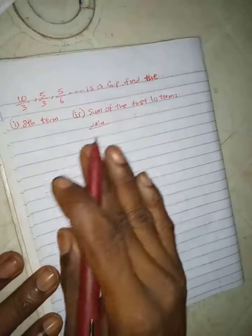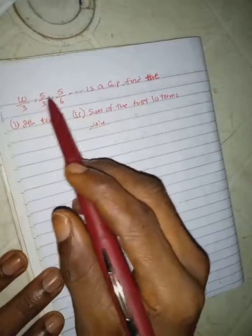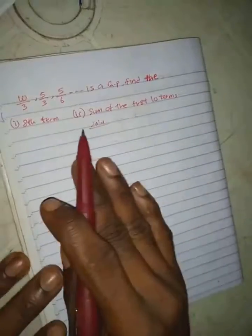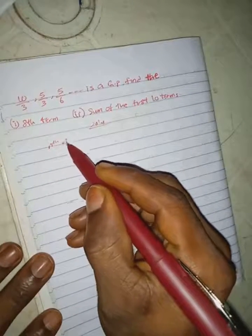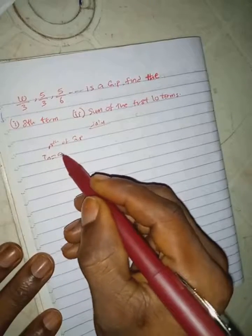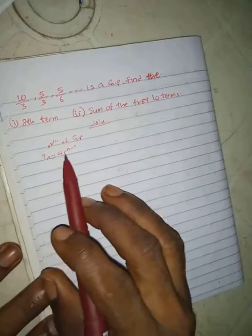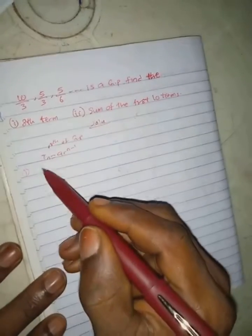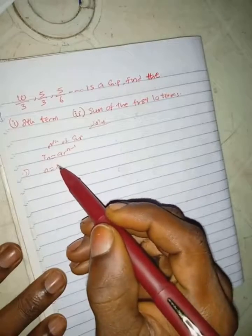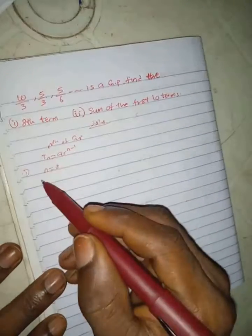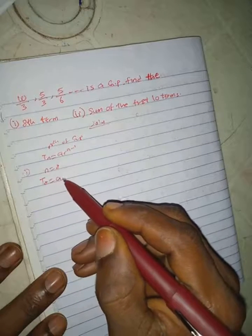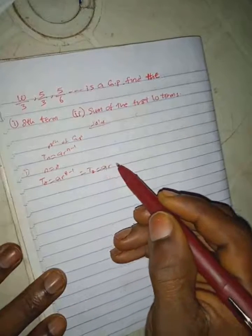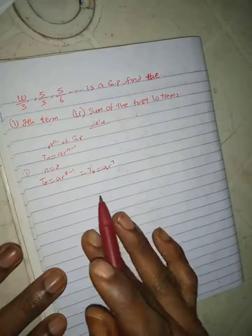In the solution, we are given the first term, second term, and third term. Our first term a is equal to 10/3. The general formula for the nth term of a GP is: Tn = a · r^(n-1). We want to find the 8th term, so n equals 8. Substituting n = 8 into the formula, we have T8 = a · r^7.